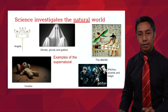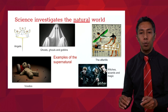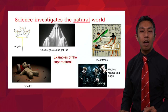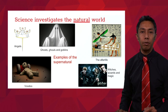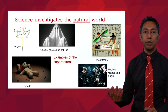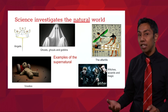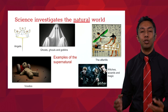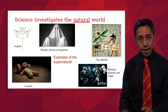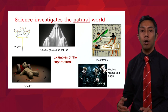Another thing that science does is it only investigates the natural world, as opposed to what we call the supernatural — above or beyond the natural. Examples of the supernatural include angels, ghosts, ghouls, goblins, leprechauns, banshees, voodoo, the afterlife, witches and magic. Science does not investigate those. It restricts itself to natural phenomena and providing natural explanations for events, so it never boils down to 'angels did it' or 'ghosts pushed that glass off the table.'